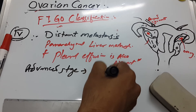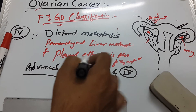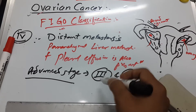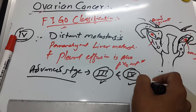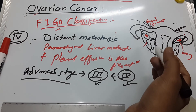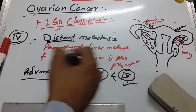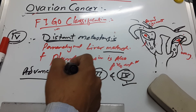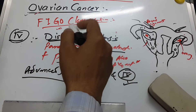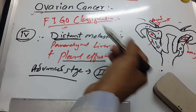You need to remember that 'advanced stage' in MCQs always refers to Stage III and Stage IV. In MCQs, questions about treatment of advanced stage require you to know that Stage III involves extension to the omentum and small bowel, and Stage IV means the cancer is already disseminated with distant metastasis, parenchymal liver metastasis, and pleural effusion. That's all about FIGO classification — next video we will discuss about diagnosis and treatment. Thank you.